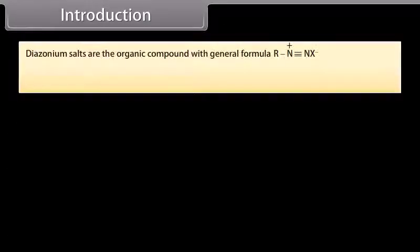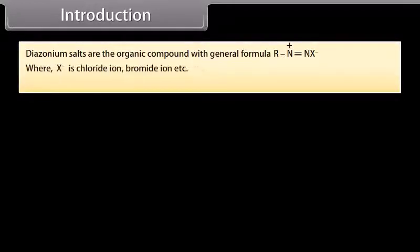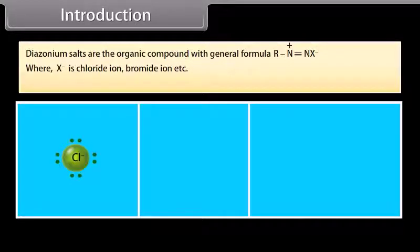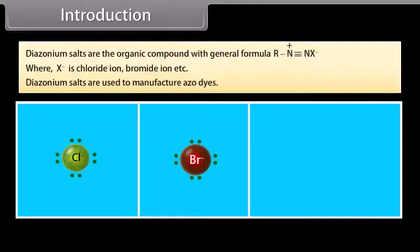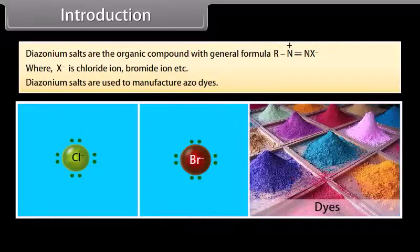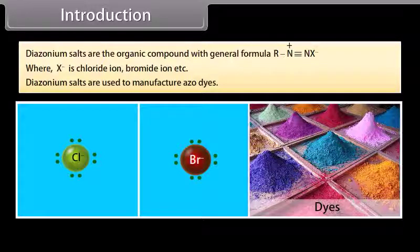Diazonium salts are the organic compounds with general formula RN2+ X−, where X− is chloride ion, bromide ion, etc. Diazonium salts are used to manufacture azo dyes. In this lesson, we will learn more about amines and diazonium salts.